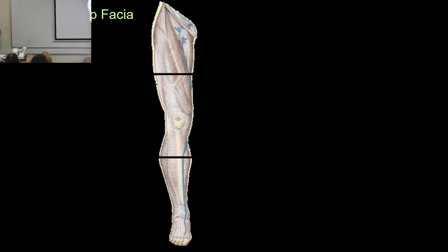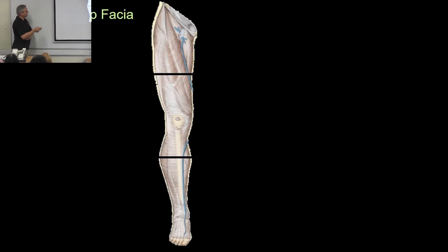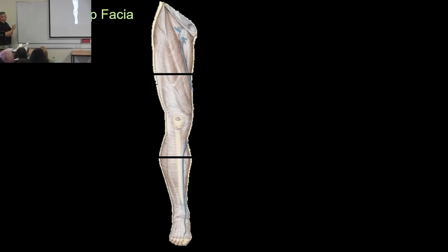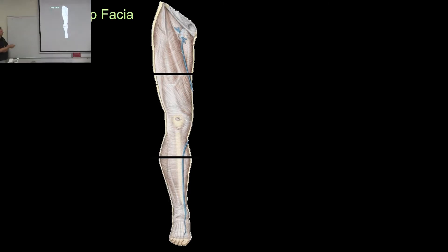That was a quick whistle-stop tour of blood vessels and nerves — the main ones we care about. If we remove the skin and fat, we end up with the fascia. The fascia is like a stocking that holds all the muscles together, and although it seems fairly trivial, it's actually a really important structure because without it we couldn't return blood to the heart from the lower limb.